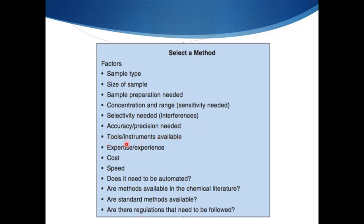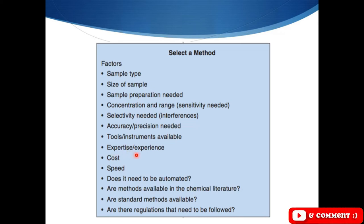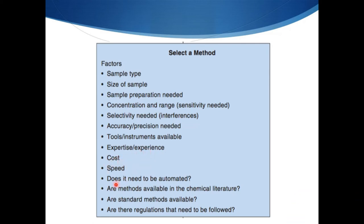We have to prepare samples according to the tools or instruments available. For example, if we want to measure the concentration of a substance by UV-visible spectroscopy, we have to make a diluted sample, be sure about the dilution factor, and multiply this factor with the result at the end. The analyst should also consider their expertise and experience. Cost, speed, and whether the process needs to be automated are also factors — automation means you don't need to be present at the machine all the time.